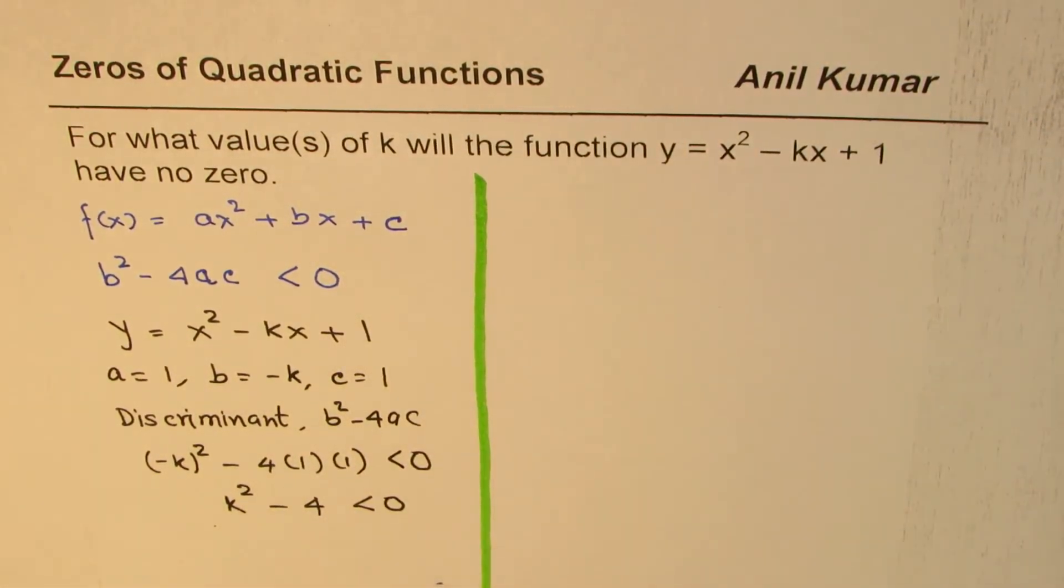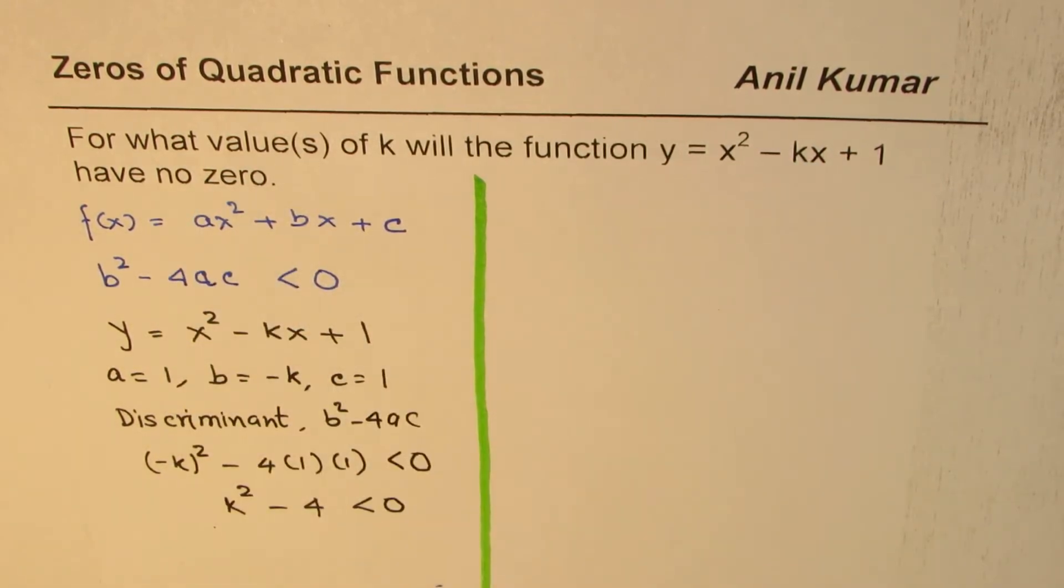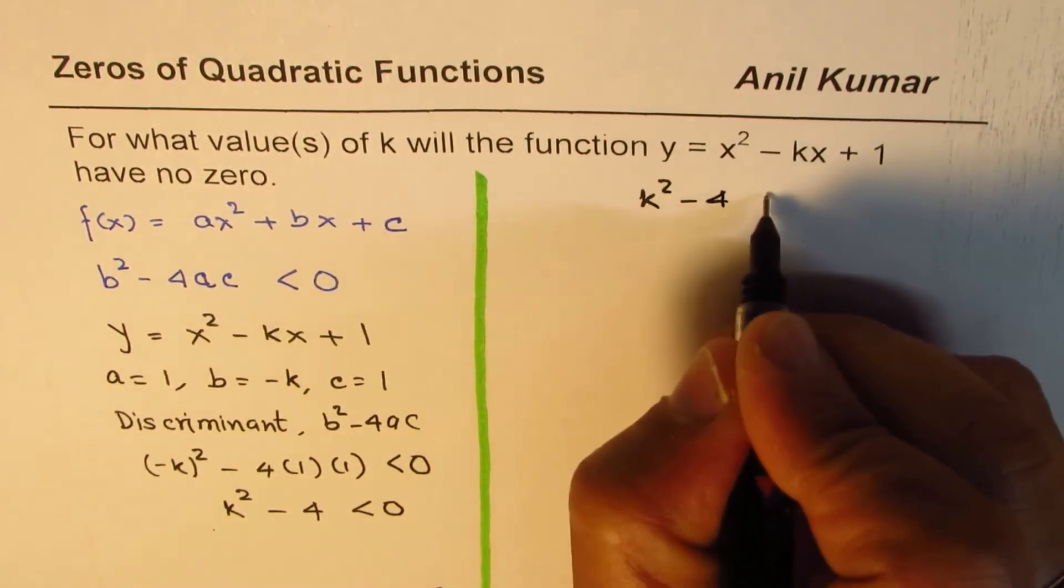You can actually pause the video now and solve the question or the inequality. We are working with the inequality k² - 4 < 0. I've seen students sometimes making a mistake in this solution, and therefore I'm going to take this up in two steps.